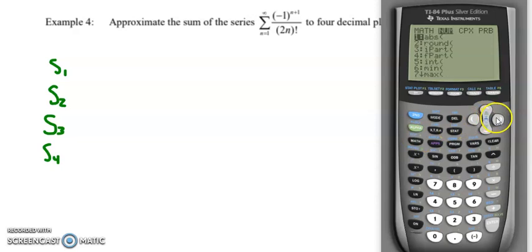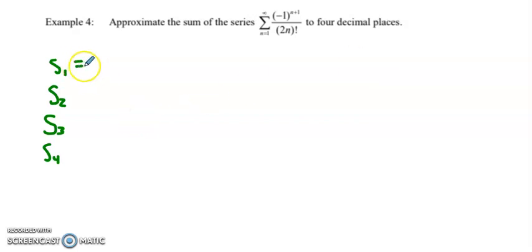And then for factorial, I go to math, scroll right to probability, and down to number 4. And that should be exactly what I wanted it to be. I see that exact formula that I wanted, and think about it. If I plug in my first term, my denominator is 2, and my numerator is 1, so it's 1 half. So the sum of just the first term is 1 half.